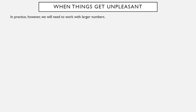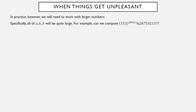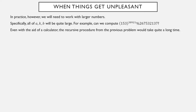What if we were working with larger numbers? Specifically, all of the numbers are going to be pretty large. Can we compute the remainder when 153 to the 38,921st power is divided by 267,532,137? Even with a calculator helping us, the recursive procedure would take a very long time — multiply by 153, reduce mod 267,532,137, and do that 38,921 times. That'd be really tedious.